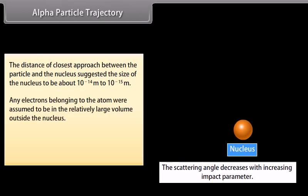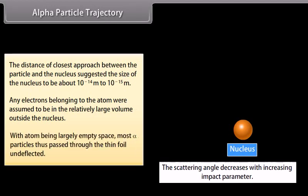Any electrons belonging to the atom were assumed to be in the relatively charged volume outside the nucleus, with the atom being largely empty space. Most alpha particles thus passed through the thin foil undeflected.